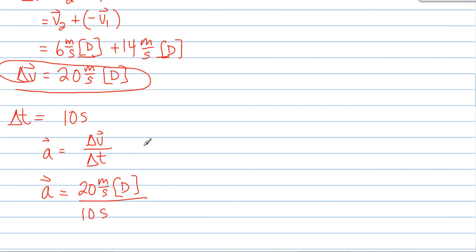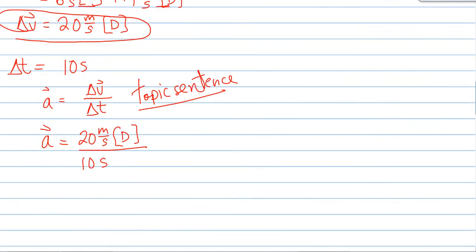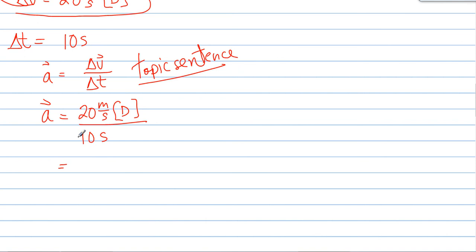This is my sort of what we call topic sentence or opening sentence that we know we need to begin with and then you can substitute in with the quantities as they apply. 20 meters per second divided by 10 seconds gives us a unit of meters per second per second. And 20 divided by 10 is 2 meters per second and the direction is down.